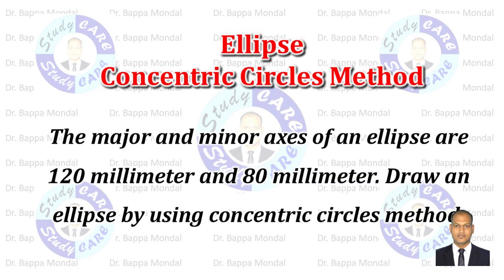We will draw an ellipse using the concentric circles method. The major and minor axes of the ellipse are 120 mm and 80 mm. Draw an ellipse by using the concentric circles method.